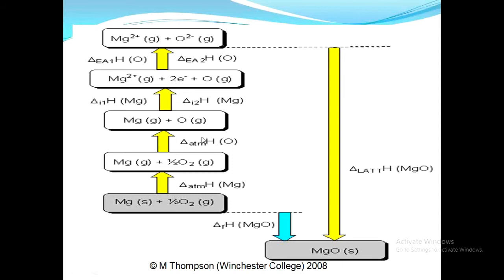The atomization enthalpy of oxygen would not be given by the examiner — it is to be taken from the data booklet. In the third step, this was the conversion of magnesium to the Mg²⁺ ion in gaseous form, so we would be needing the first ionization energy and the second ionization energy of magnesium.